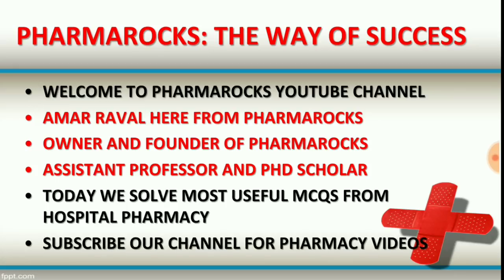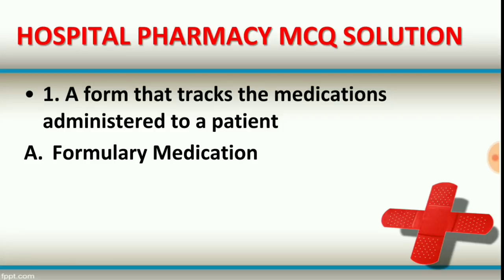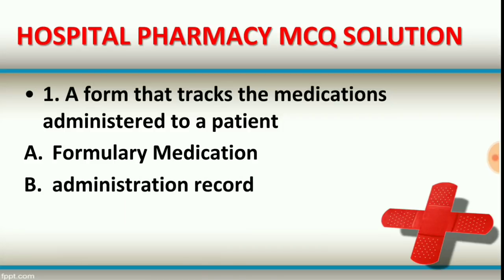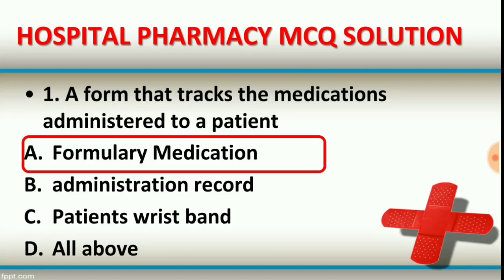Today we solve the most useful MCQs from hospital pharmacy subject. Question number one: a firm that tracks the medications administered to the patient. Option A: formulary medication. Option B: administration record. Option C: patient wristband. Option D: all of the above. The right answer is option A, formulary medication — it is called a formulary medication.